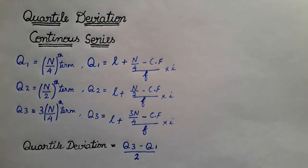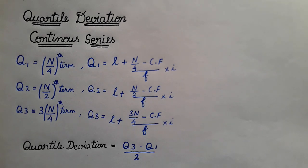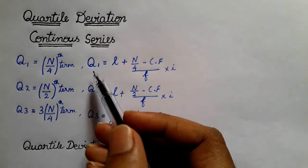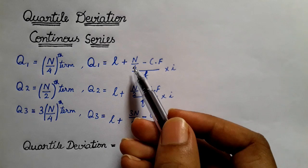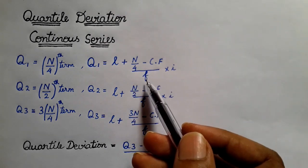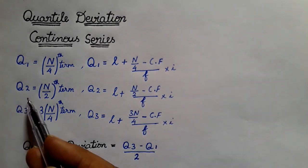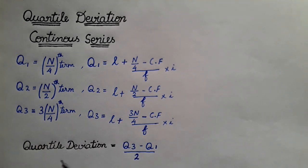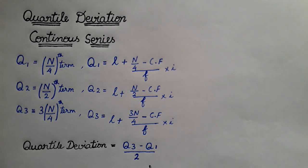In this video, we will talk about the quartile deviation in the continuous series. The quartile 1 formula is n by 4 as the term. Another formula for quartile 1 is l plus n by 4 minus cf divided by f into i. The main formula for quartile deviation is Q3 minus Q1 divided by 2.